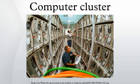Within the same time frame, while computer clusters used parallelism outside the computer on a commodity network, supercomputers began to use them within the same computer. Following the success of the CDC 6600 in 1964, the Cray-1 was delivered in 1976 and introduced internal parallelism via vector processing. While early supercomputers excluded clusters and relied on shared memory, in time some of the fastest supercomputers relied on cluster architectures.